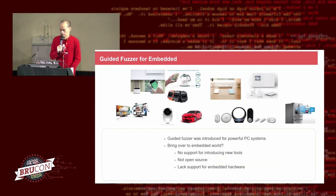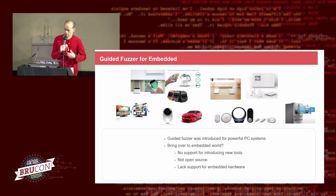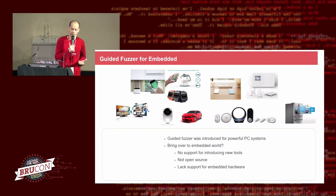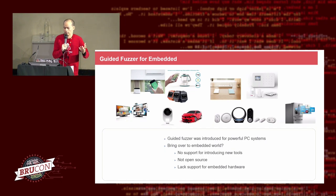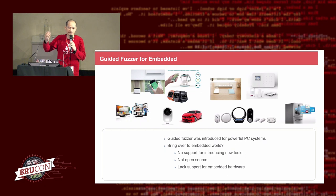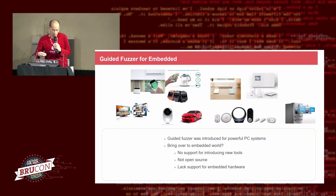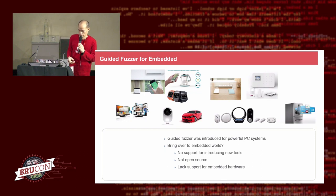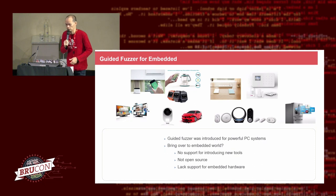Coverage-guided fuzzing was introduced for very powerful PC systems. Once you have a program with source code, people typically use guided fuzzing like AFL and compile the program to run on a PC, not on any embedded system like ARM, ARM64, or MIPS. Because the Intel CPU is much more powerful, you can run the fuzzing at much faster speed, so it's more productive to find bugs.